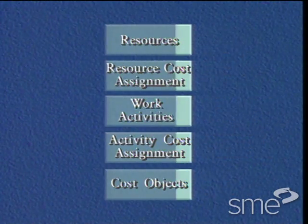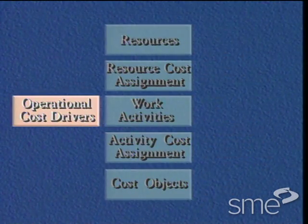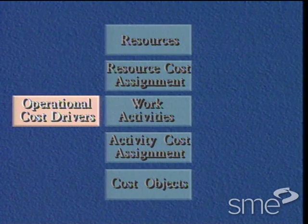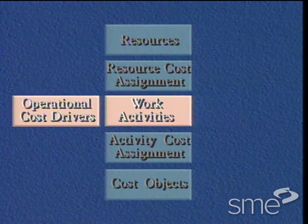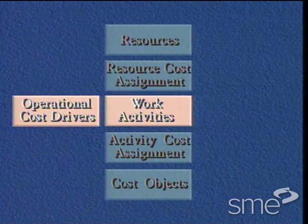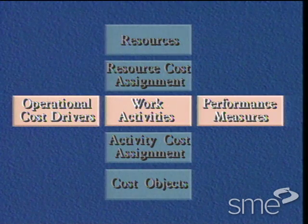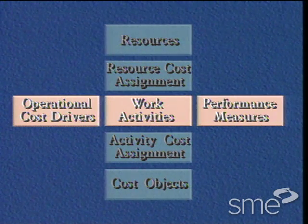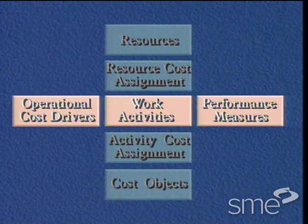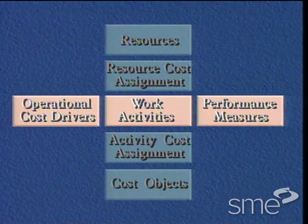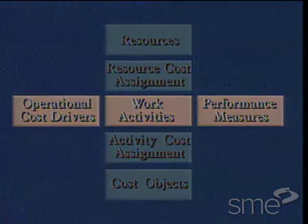Activity-based management uses ABC data to direct processes and their constituent activities, then evaluates those activities performed to support things like continuous improvement, total quality management, and business process re-engineering.